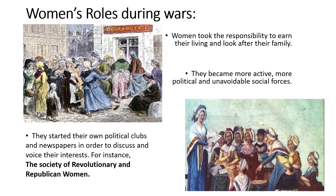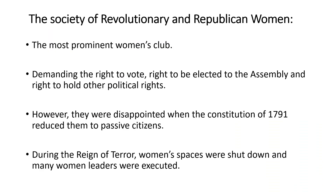For instance, the Society of Revolutionary and Republican Women was one of the most prominent women's political clubs during the time, just like the Jacobins Club. It was the most famous among nearly 60 women's clubs formed across French society. One of their main demands was for women to be entitled to the same political rights as men — specifically the right to vote, the right to be elected to the assembly, and the right to hold political office. They believed that only by gaining such rights could they truly represent the interests of women as a whole in the new government and consequently implement relevant laws and policies.